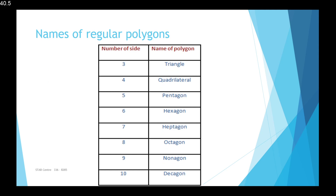So a polygon, as we mentioned before, is a two-dimensional shape with three or more sides. A shape having three sides would be a triangle, four sides a quadrilateral, five sides a pentagon, six sides a hexagon, seven sides a heptagon, eight sides an octagon, nine sides a nonagon, and ten sides a decagon. We need to know the names of these polygons and the corresponding number of sides.